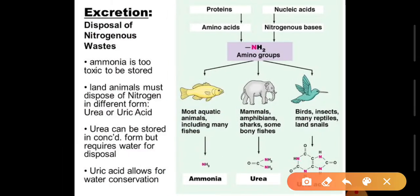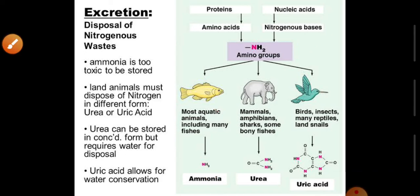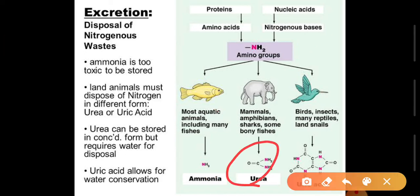The main sources of ammonia in the environment include decaying of organic matters and also the excretions of human beings and animals, especially cattle. Protein is converted into amino acids, which are further converted into amino groups. Most aquatic animals including many fishes release ammonia directly. Mammals, amphibians, sharks, and some bony fishes release urea. Insects, birds, many reptiles, and land snails release uric acid.